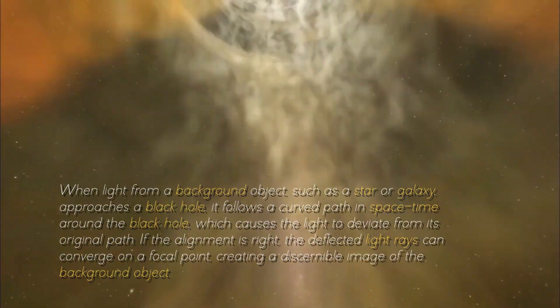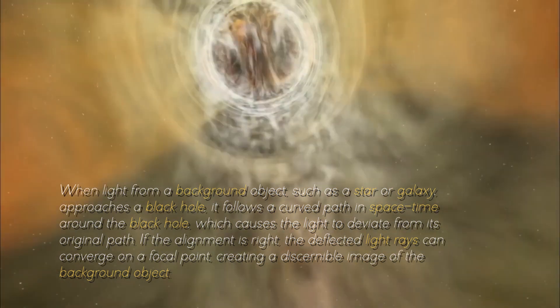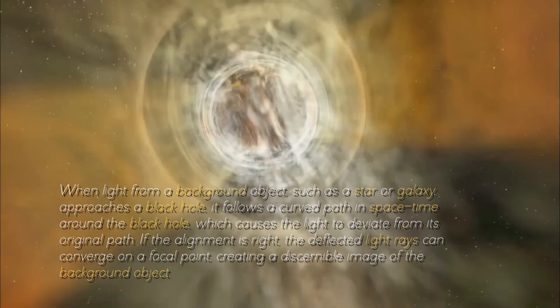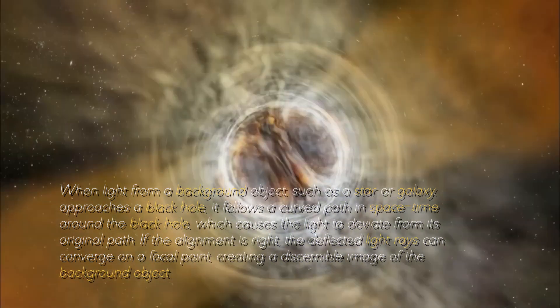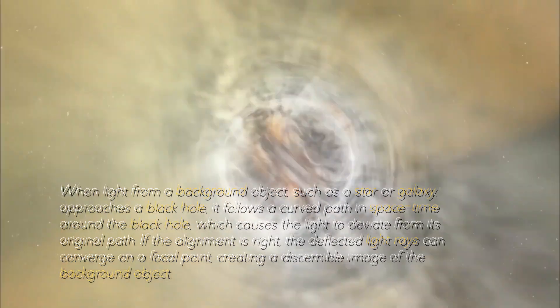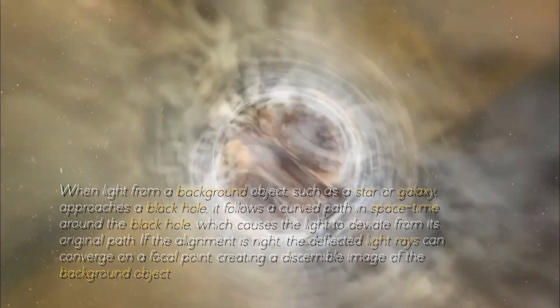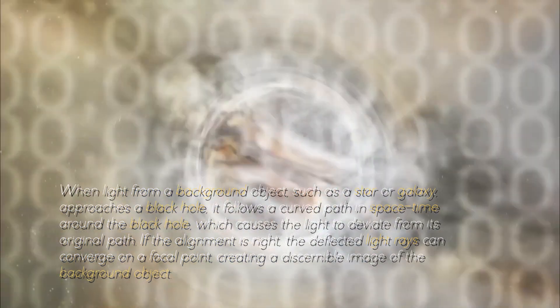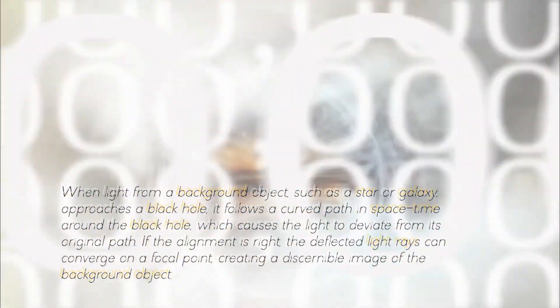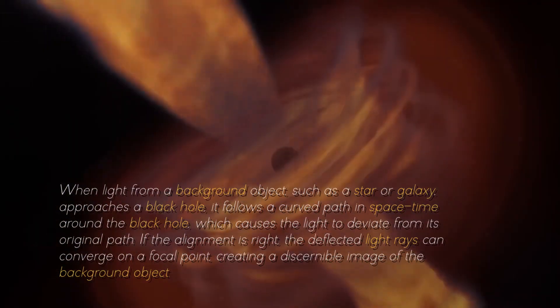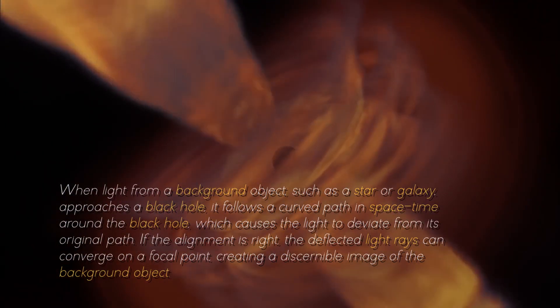When light from a background object, such as a star or a galaxy, approaches a black hole, it follows a curved path in spacetime around the black hole, which causes the light to deviate from its original path. If the alignment is right, the deflected light rays can converge on a focal point, creating a discernible image of the background object.